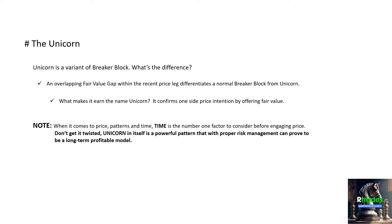What makes the Unicorn pattern — and the name 'Unicorn' — is that it confirms one-sided price intention by offering fair value. The PD array called the fair value gap, when identified within the breaker block, confirms one-sided price intention by offering that fair value price at that range.